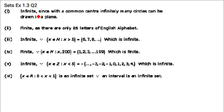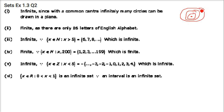The second question asks which of the following sets are finite and which are infinite. First: the set of concentric circles in a plane. You can keep changing the radius, so there are infinitely many concentric circles. This set is infinite.